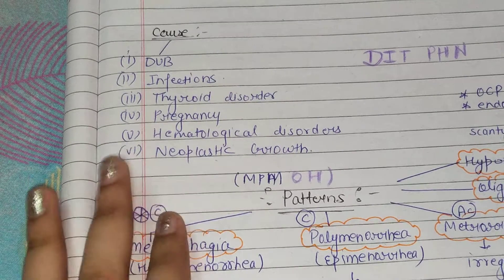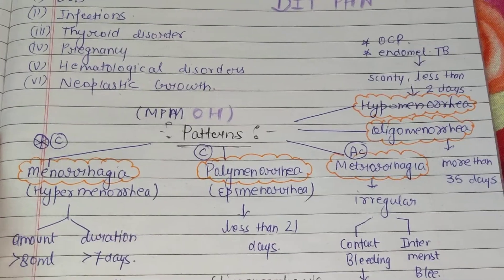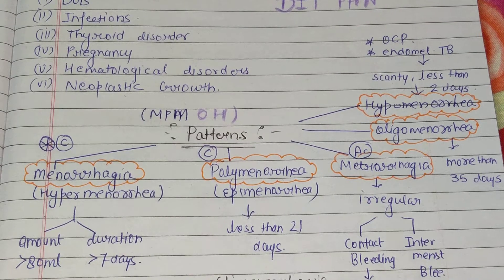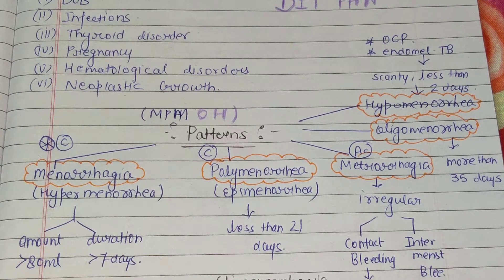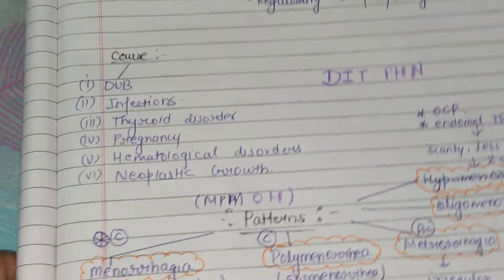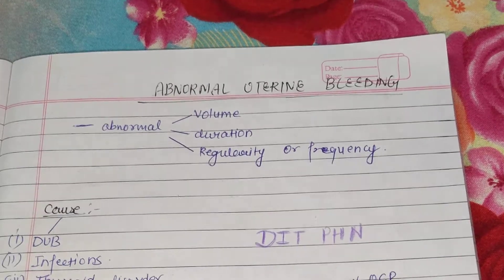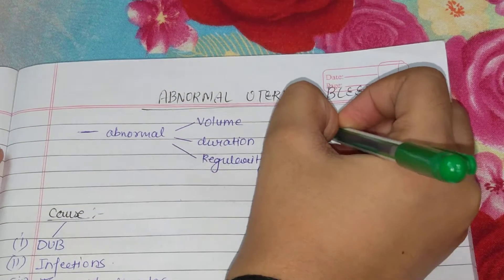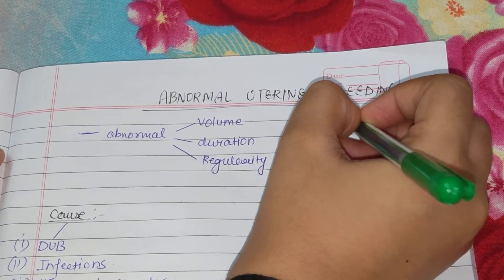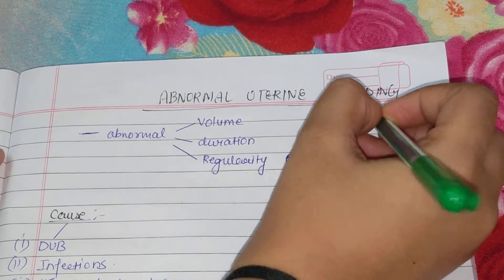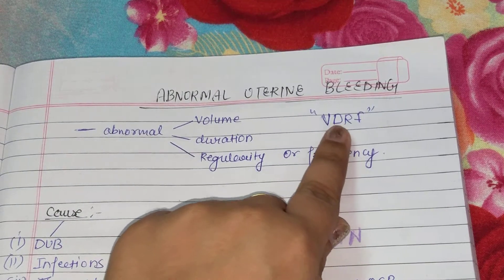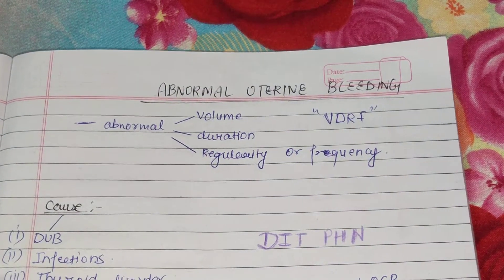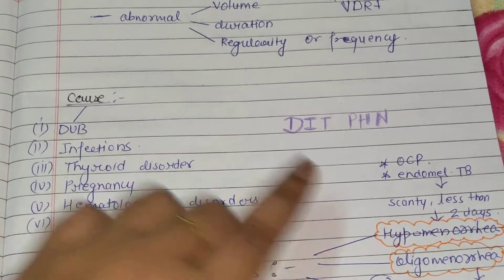Next, what are the patterns of Abnormal Uterine Bleeding? Abnormal Uterine Bleeding means what is abnormal in Volume, Frequency, Regularity, and Duration — we call it Abnormal Uterine Bleeding. To remember this, I have a very good trick: use VDRF — that is Volume, Duration, Regularity, and Frequency. We have also remembered causes as DIT-PHN.